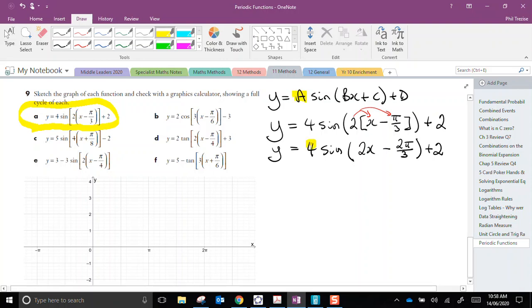Now we can see a correspondence between a, a is 4, b is 2, c is 2 pi over 3, and d is 2.